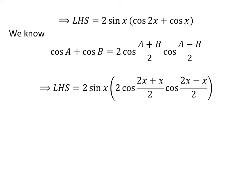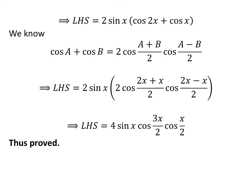Applying the above identity, the left-hand side of the equation is equal to 2 times sine of x times 2 times cosine of (2x+x)/2 times cosine of (2x−x)/2. Further simplification gives us the left-hand side equal to 4 times sine of x times cosine of 3x/2 times cosine of x/2, which equals the right-hand side of the given equation. So, we have proved the given equation.